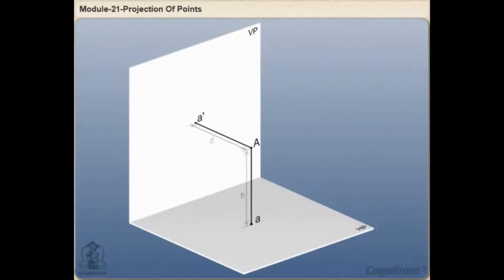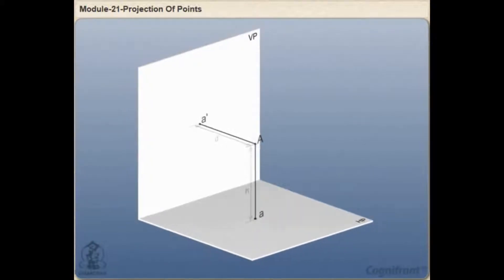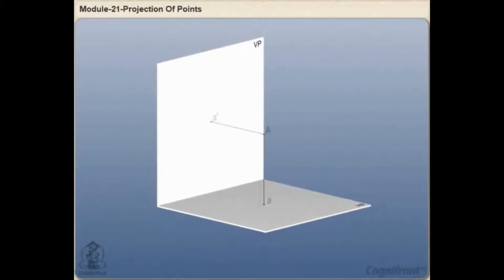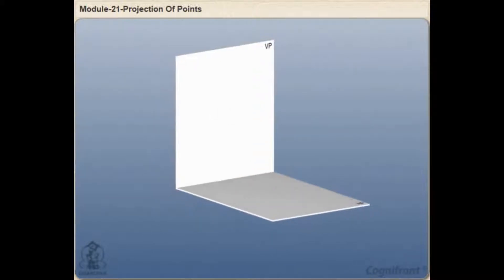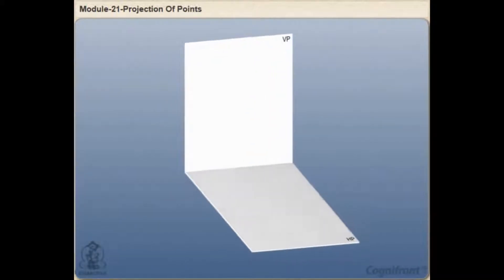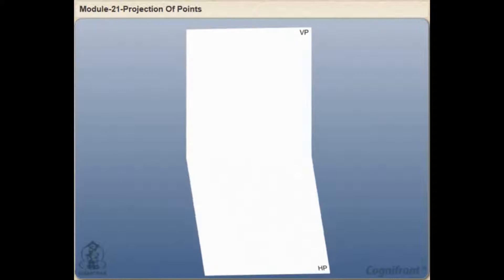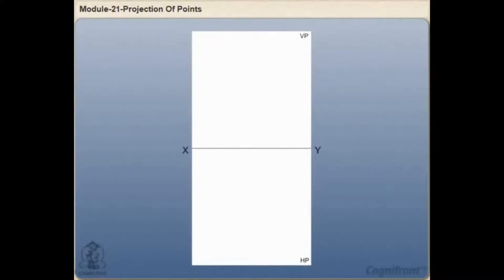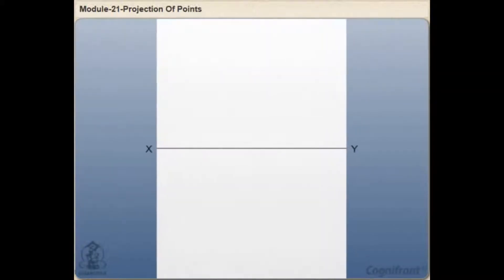So let's draw this projection onto a paper, considering the HP is rotated in the clockwise direction by 90 degrees so that it becomes coplanar with the VP. For this, draw a horizontal reference line XY.